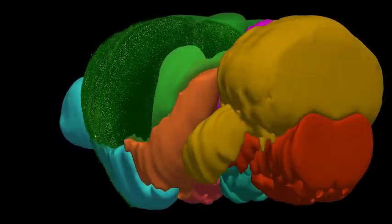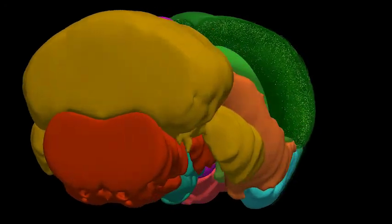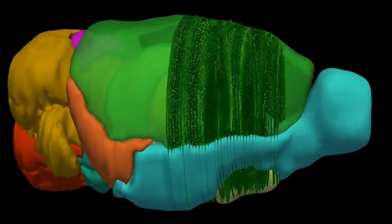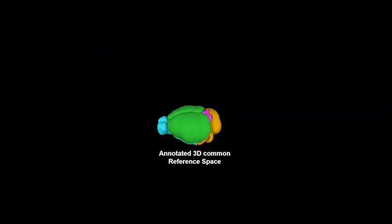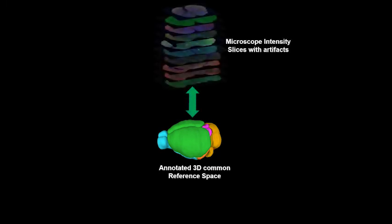In this work, we introduce a framework to create such visualizations from conventionally produced mouse brain slices which may contain histological artifacts. This is achieved by constructing an annotated 3D reference space and aligning the microscopic mouse brain slices to this reference space.